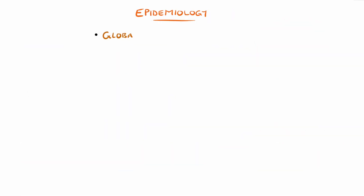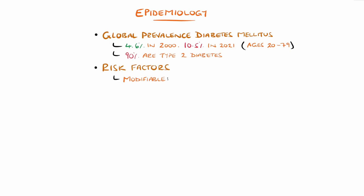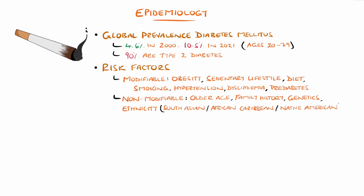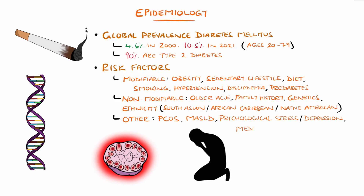In 2000, global diabetes prevalence amongst adults aged 20 to 79 was 4.6%. By 2021, it had risen to 10.5%. Approximately 90% of cases are type 2 diabetes. Modifiable risk factors include obesity, particularly central adiposity, sedentary lifestyle, unhealthy diet, smoking, hypertension, dyslipidemia, and a history of gestational diabetes or prediabetes. Non-modifiable risk factors include older age, family history or genetic predisposition, and certain ethnic backgrounds, such as South Asian, African Caribbean, and Native American. Additional associated risk factors include polycystic ovarian syndrome, metabolic dysfunction-associated steatotic liver disease, psychosocial stress, depression, and the use of certain medications like corticosteroids.